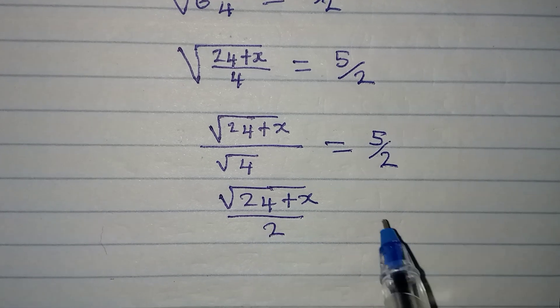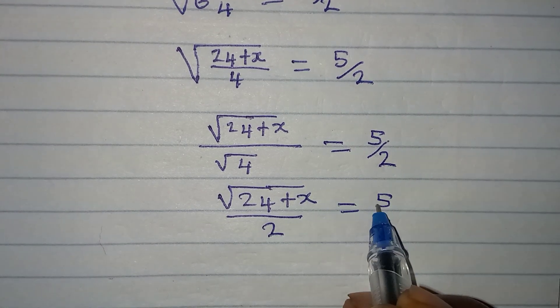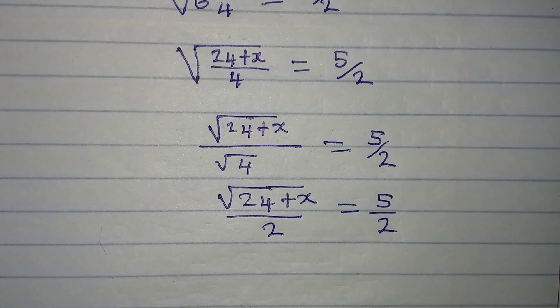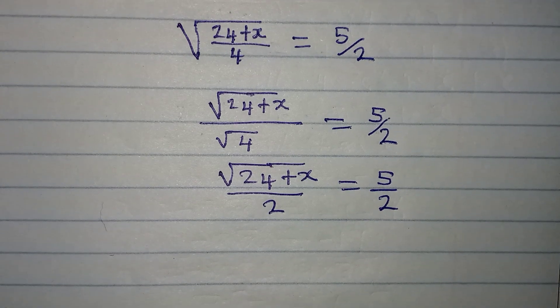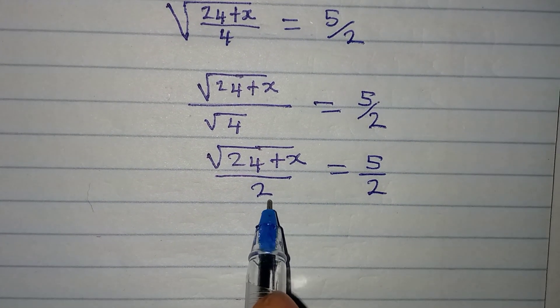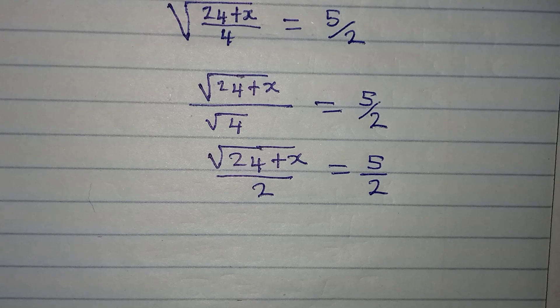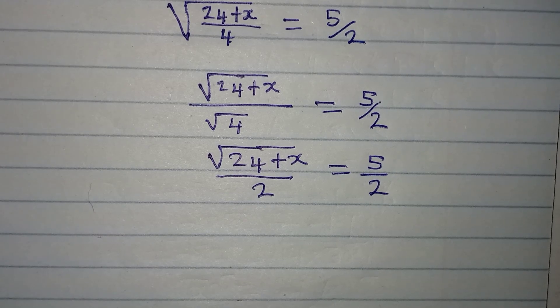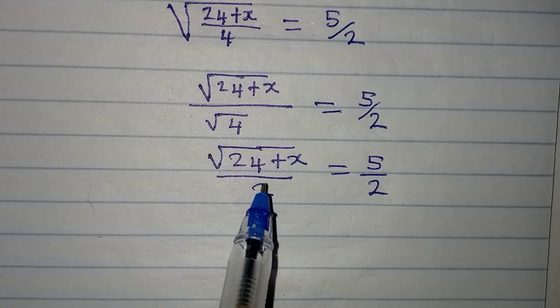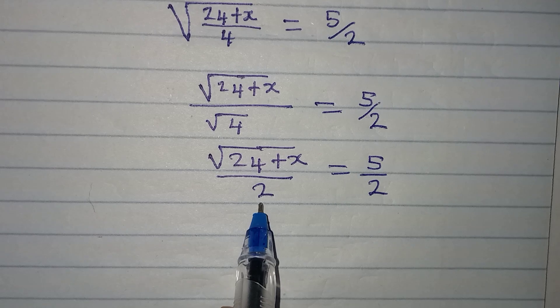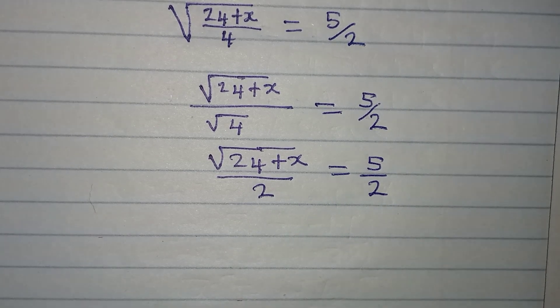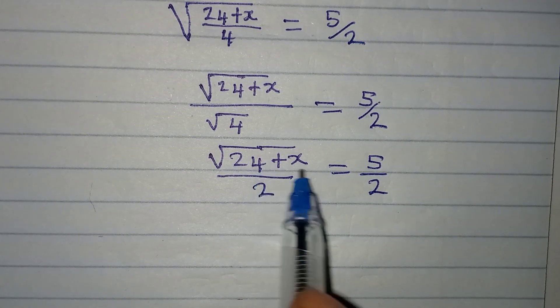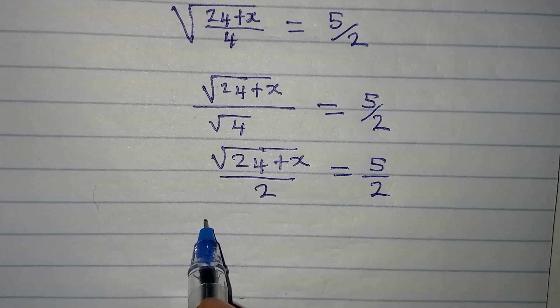Do not forget that anytime you have the same denominator, you can decide to work with the powers. If this is equal to this and the denominators are the same, definitely the numerators should be the same. So we can just say that square root of 24 plus x is equal to 5.